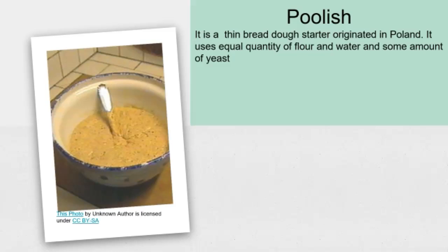Next word is poolish. It is a thin bread dough starter originated in Poland. It uses equal quantity of flour and water and some amount of yeast, depending upon the rate of fermentation which is required.